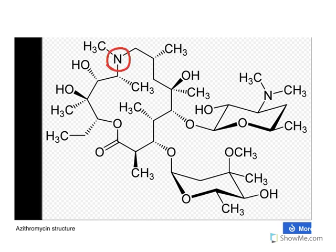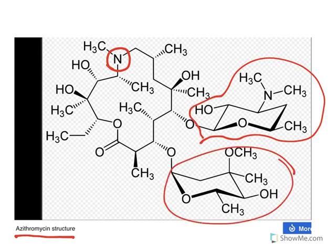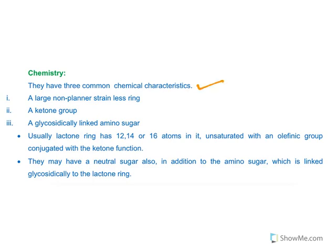The other difference is: this big ring is made up of 14 atoms in case of erythromycin and clarithromycin, whereas azithromycin is made up of 15 atoms. So this is the structural aspect. Getting into the details, they have three common chemical characteristics: a large non-polar strainless ring, a ketone group, a glycosidically linked amino sugar. They have a neutral sugar as well as an amino sugar, both of them glycosidically linked.